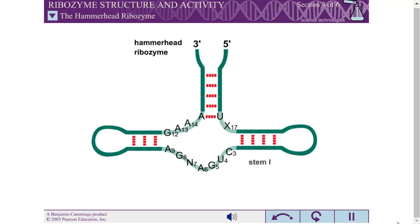The hammerhead ribozyme gets its name from the shape of its secondary structure, which consists of 3 base-paired stems surrounding a core of non-complementary nucleotides required for catalysis.